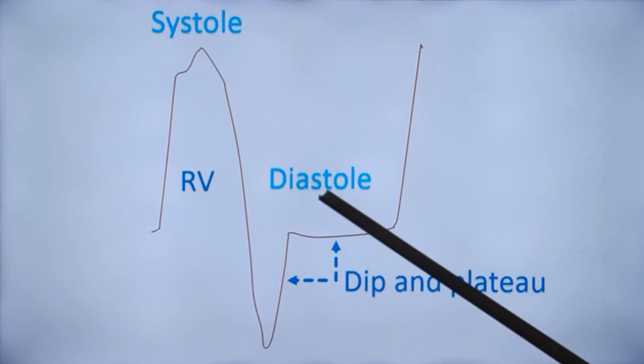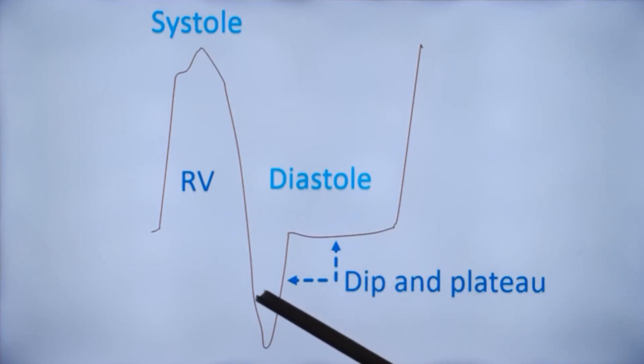As in the beginning of diastole, the ventricles are collapsed after a systole, there is no restraint and venous pressures are high. So, there is a rapid filling of the ventricle in early diastole which causes the dip.